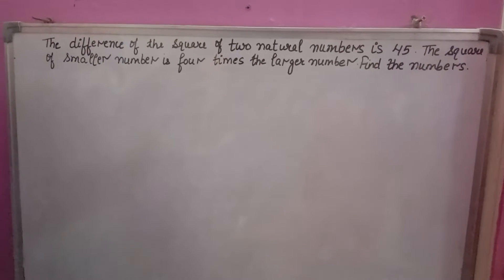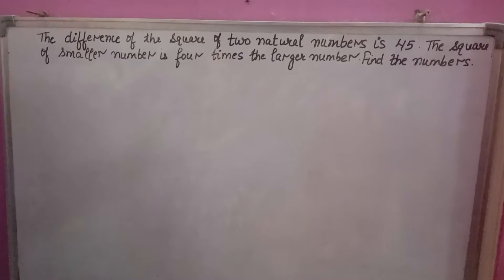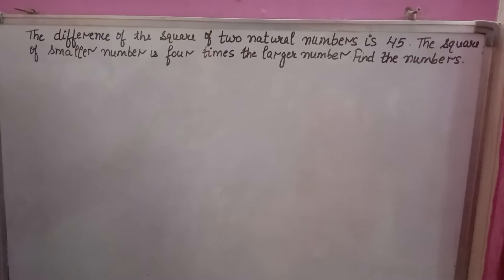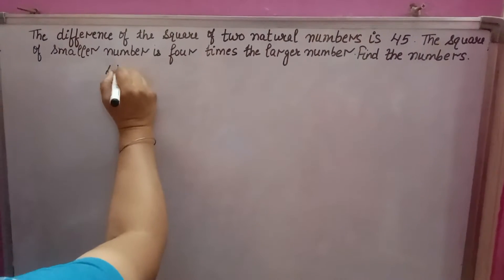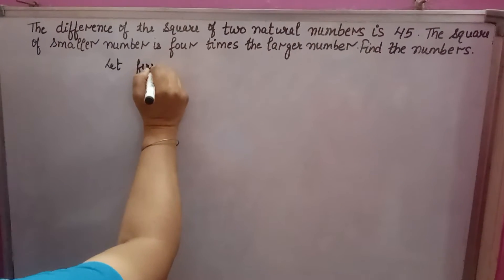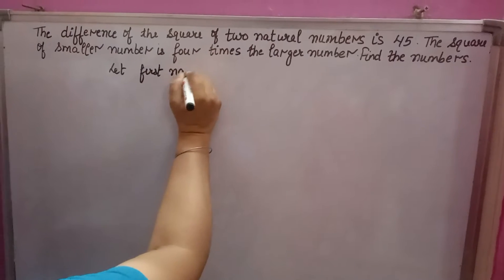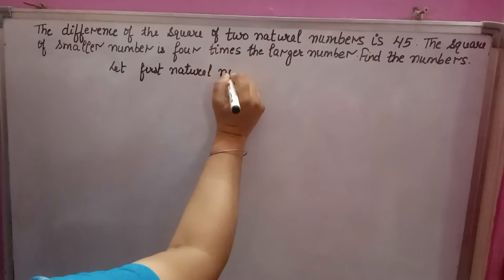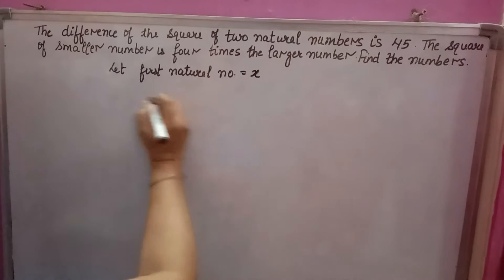Welcome back to your favorite channel Math Helpers. The difference of the square of two natural numbers is 45. So let first natural number is equal to x.